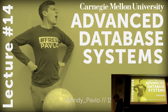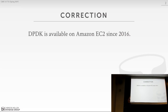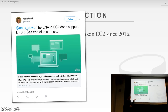Before we get into that, I want to make one correction from last class — this is the second year in a row I've made this mistake. When we talked about DPDK, the kernel bypass method that lets you read and write buffers directly on the NIC, I said you can't get it for Amazon EC2. Turns out I'm completely wrong. Amazon has supported this since 2016. They call it the Elastic Network Adapter.